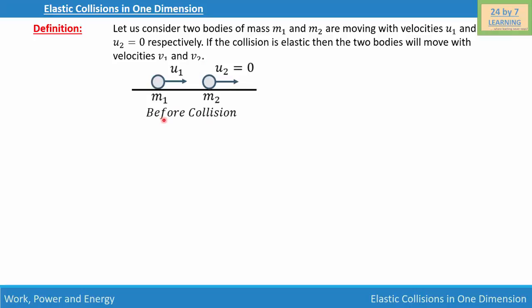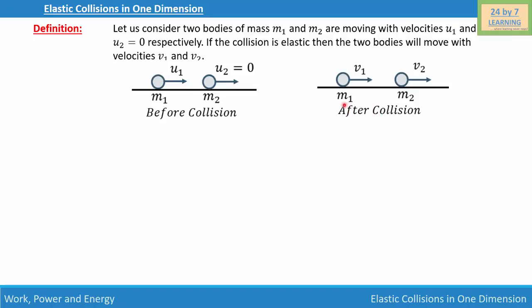My first picture is before the collision, where the body of mass m1 is moving with velocity u1 and the body of mass m2 is at rest because the second body is not moving. The second picture is after the collision, where the body of mass m1 is moving with velocity v1 and the body of mass m2 is moving with velocity v2.